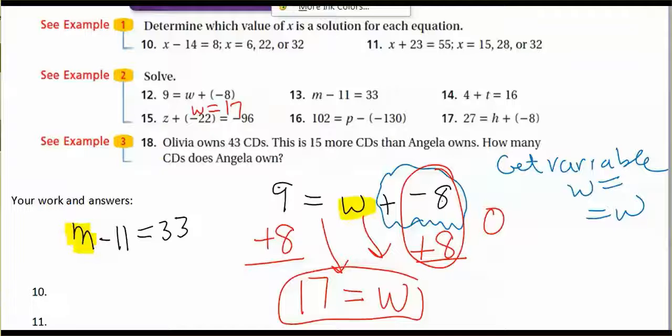11 is being subtracted. And then think what's the opposite of subtracting 11 and that is to add 11. And if you add it to one side, you have to add it to the other side as well. So now we have on the left side, M minus 11 plus 11 and on the right side, 33 plus 11. And then we simplify each side.